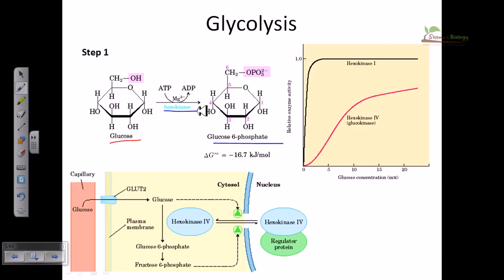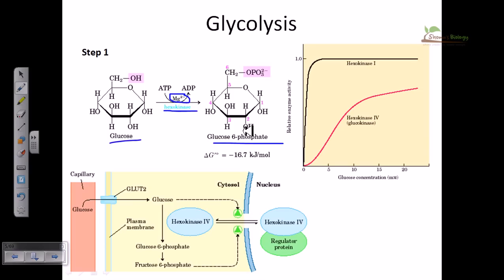The enzyme responsible for this step is called hexokinase. Hexokinase requires the presence of magnesium ions for its catalysis, and magnesium ions help establish this particular function.